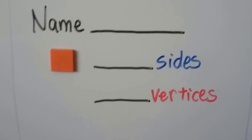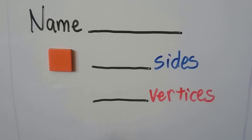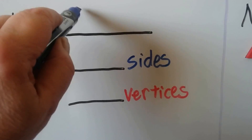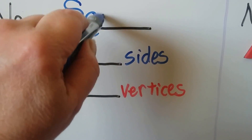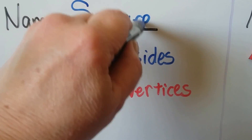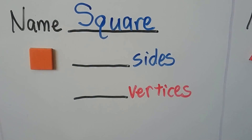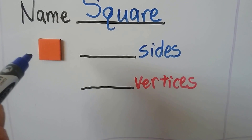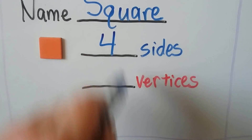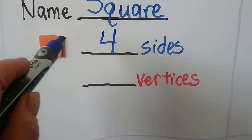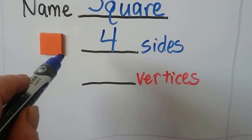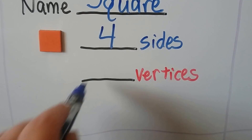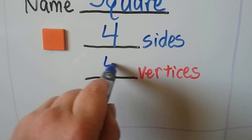You know what this one is, don't you? If you said square, you're right. It's a square. It has one, two, three, four sides, and it has one, two, three, four vertices — four corners.